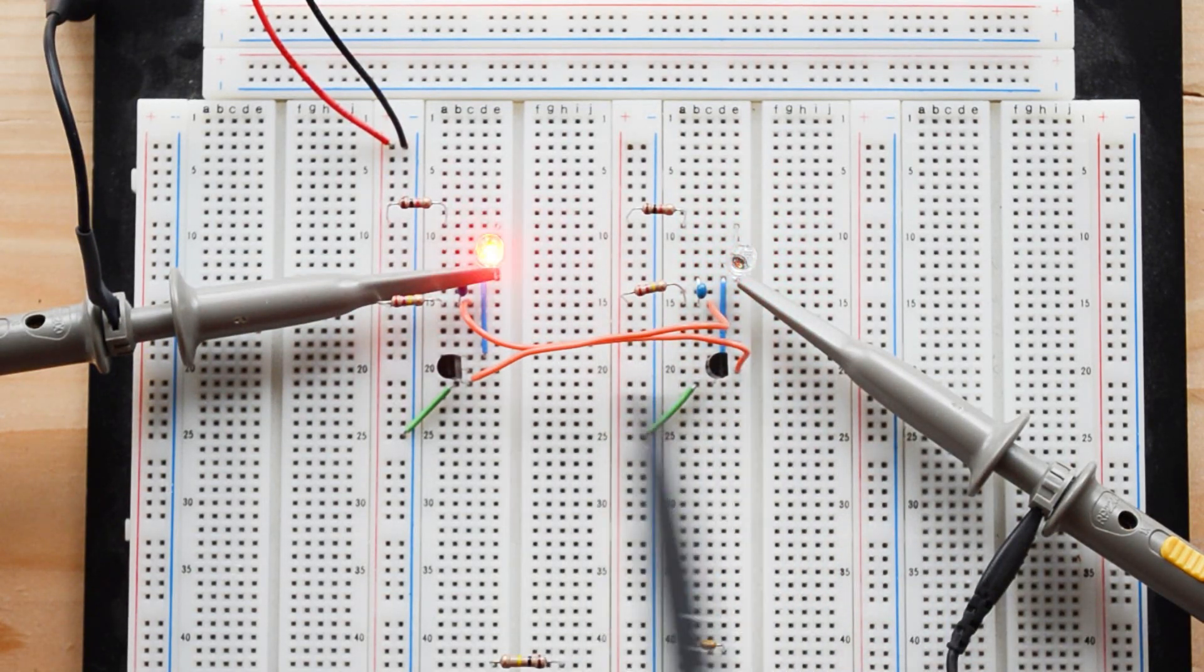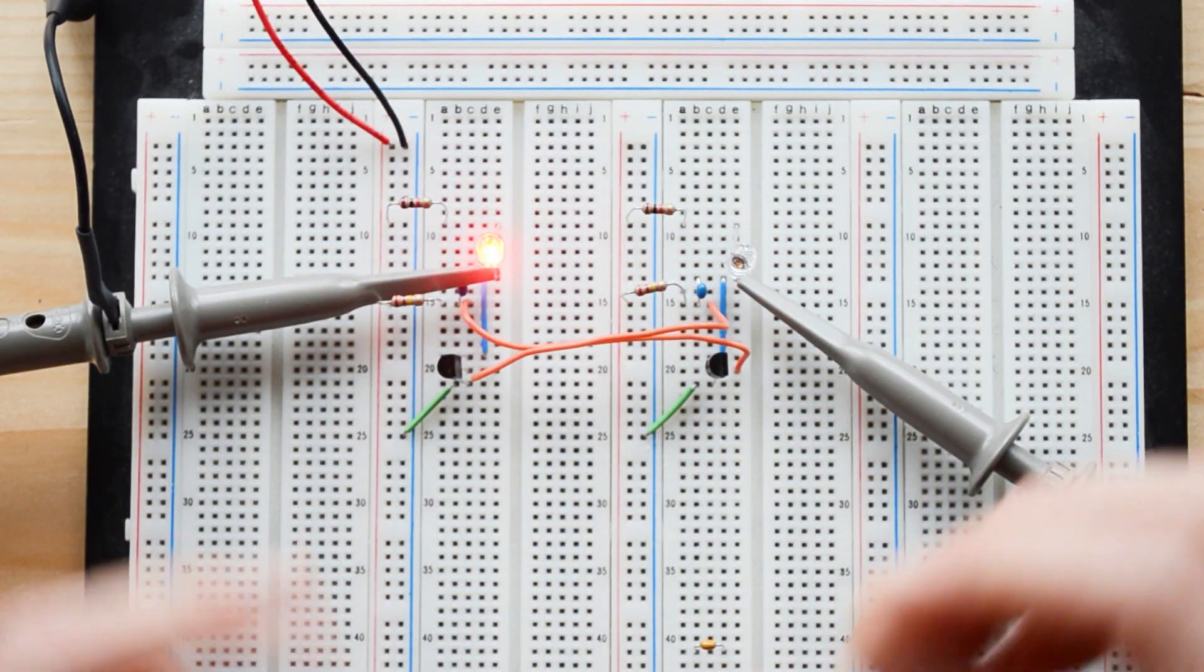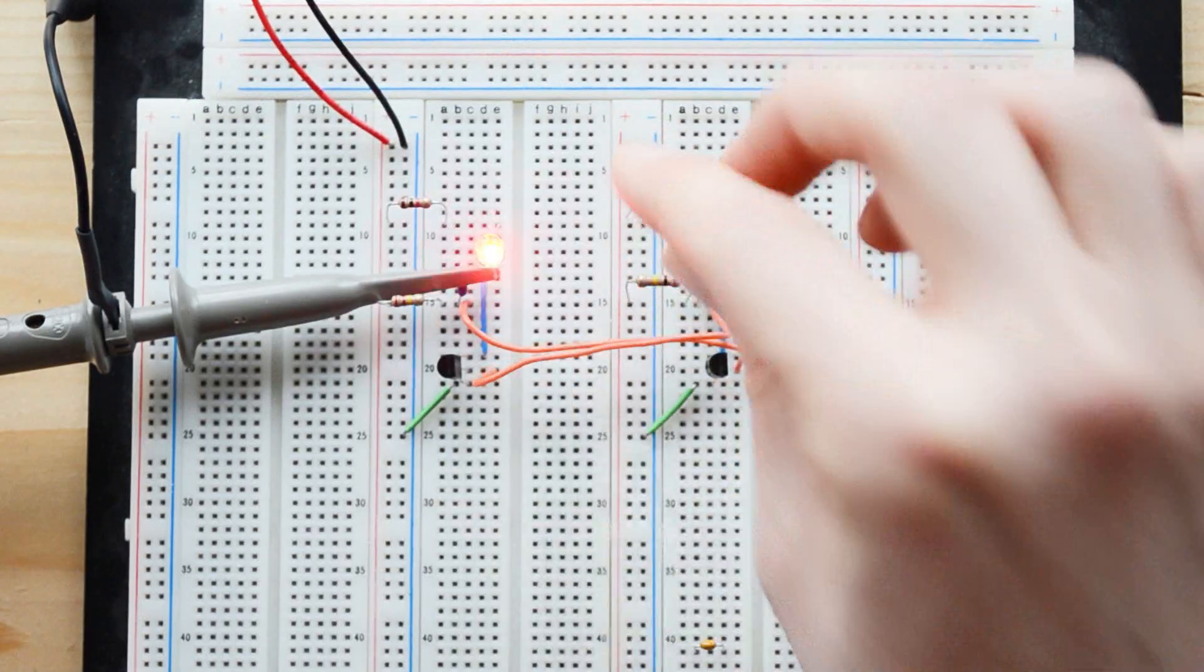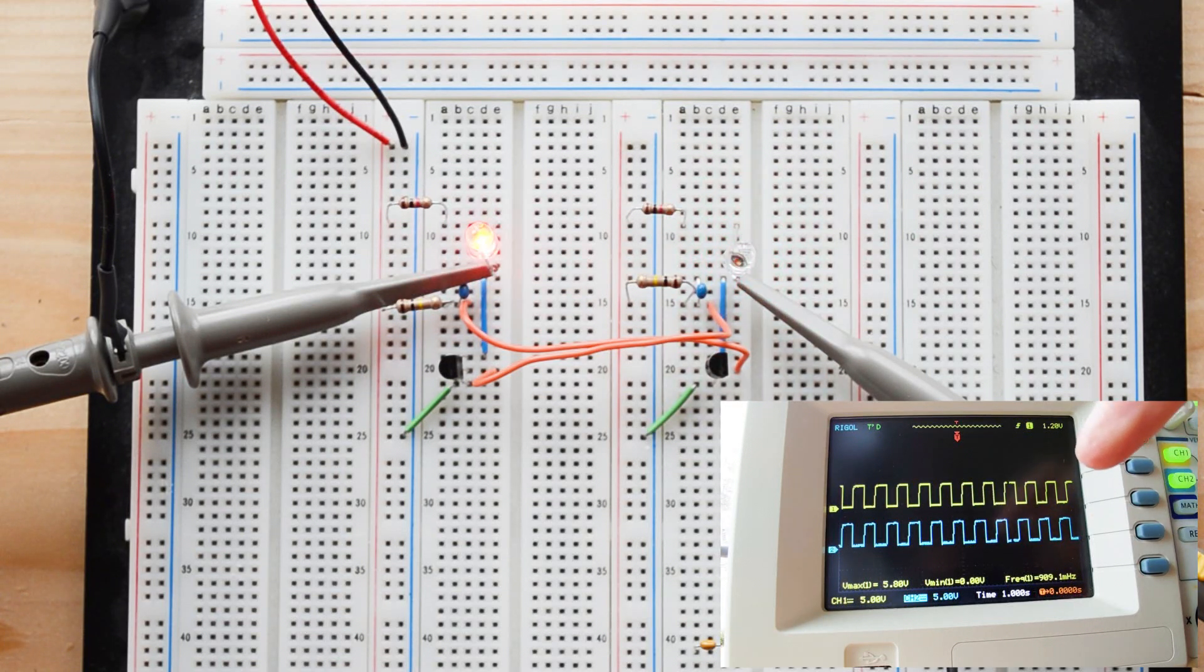So they're still blinking at the same rate. So what we want to do is first let's try to speed that up and let's change the frequency a little bit. So I've got two 100K resistors here so I'm going to switch those out with the 220K. And you can immediately see there's a change. There's a change here with our LEDs and also a change over here with our oscilloscope.